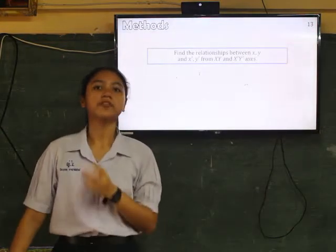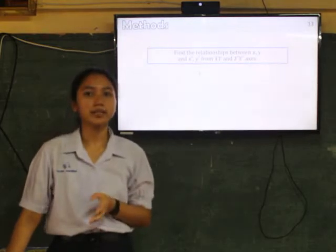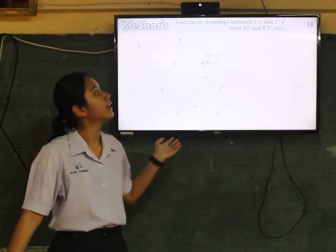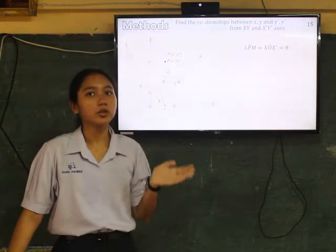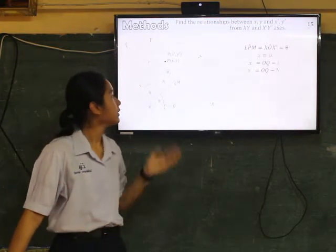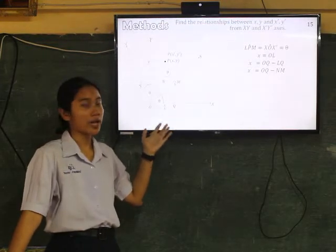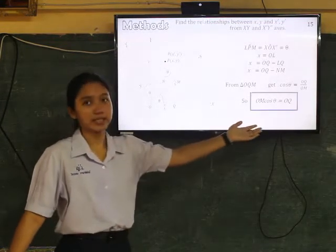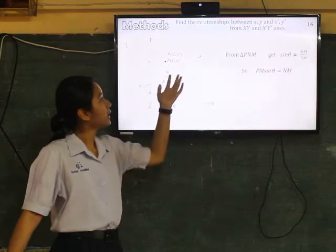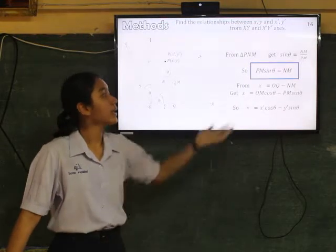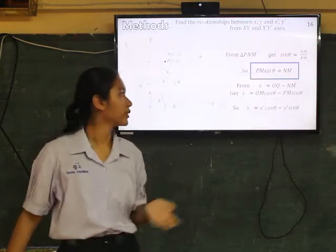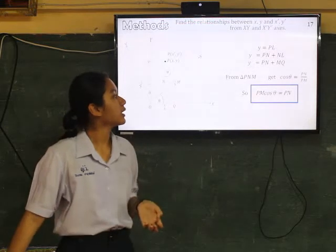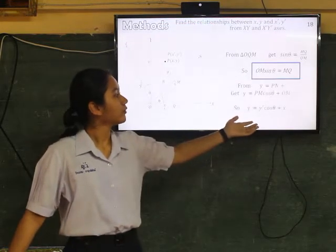Next is procedure. First, find the relationship between x, y and x prime, y prime by rotating each axis. By doing like this. Then notice angle LPM is equal, xO x prime is equal theta. And x is equal OL. So x is equal OQ plus NM. And from triangle OQM we get this relationship. From triangle PNM we get this relationship. And from x is equal OQ plus NM we get this relationship. It's the same way to get relationship of y. Finally we get this relationship.